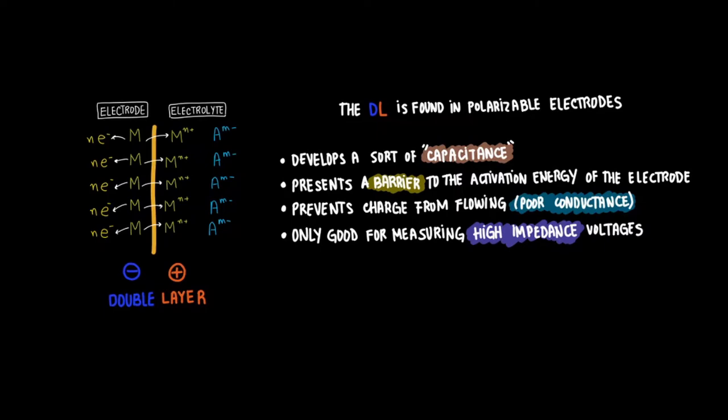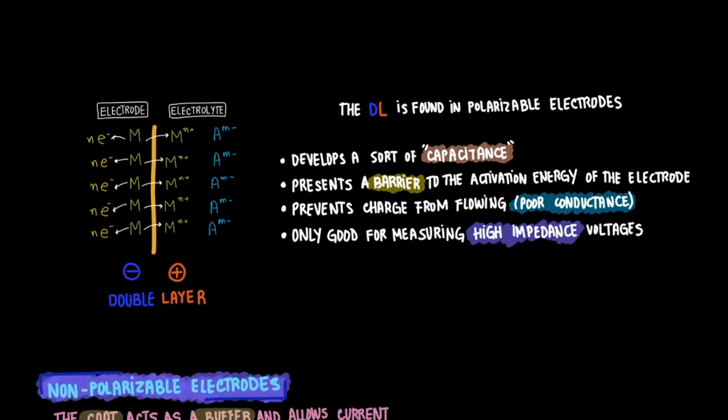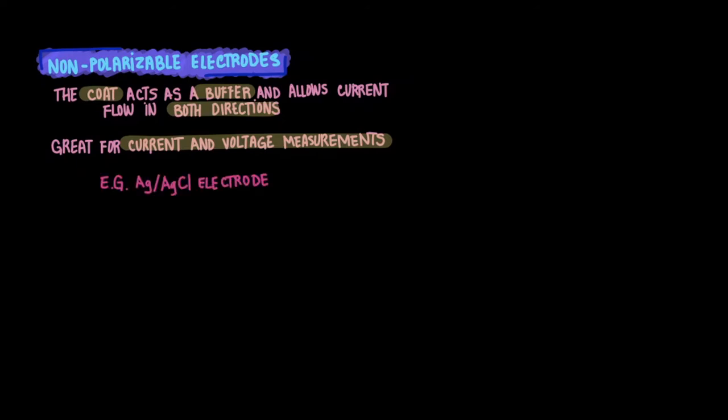In contrast to polarizable electrodes, we have non-polarizable electrodes. Non-polarizable electrodes have a coat that acts as a buffer, allowing current to flow in both directions. This is actually good for measuring both current and voltages. An example of a non-polarizable electrode is actually the silver-silver chloride electrode.